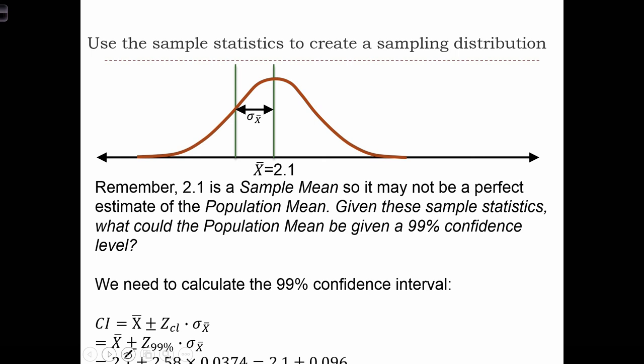Based on that, we can draw the normal curve. This normal curve is the sampling distribution. And we're going to place at the center of this normal curve, x-bar. Remember, the standard error of the mean can be considered to be the standard deviation of the sampling distribution.